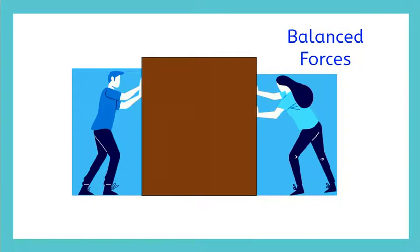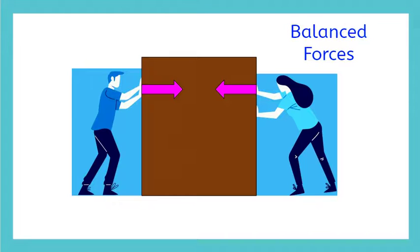But now imagine you and a friend are pushing on either side of a heavy box with equal force. The box is experiencing equal and opposite forces from you and your friend. This means the forces on the box are balanced and the box will not move.